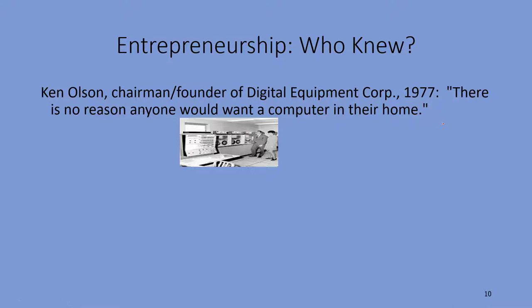One thing about entrepreneurship is that it's kind of hard to know in advance what will work. Here is a quote from Ken Olson, the chairman and founder of Digital Equipment Corporation in 1977 — kind of the Bill Gates or Steve Jobs of his time. He said there is no reason why anyone would want a computer in their home. As it turns out, he couldn't have been more wrong. But why was he saying that? Look at what computers looked like back in the 1970s — huge machines that took up half the room, basically just crunching numbers like your graphing calculator. He didn't imagine that computers today would download music, watch movies, or let you Facebook with your friends. He didn't see the internet coming. Of course, he turned out to be incorrect.